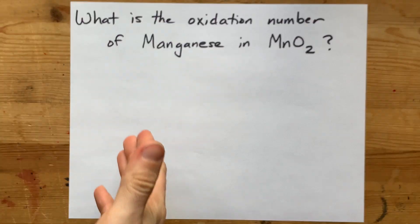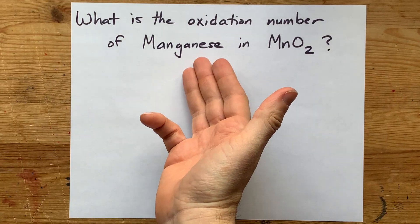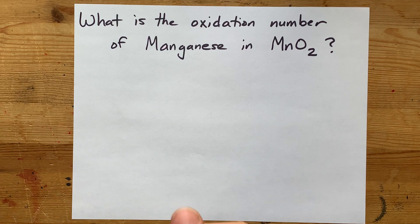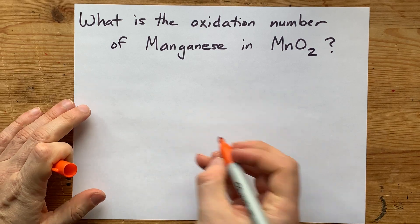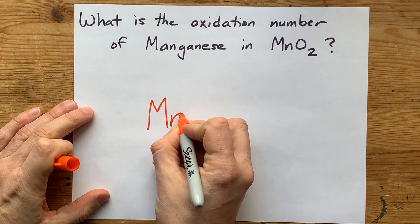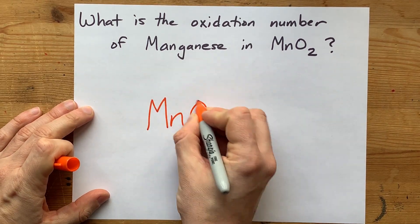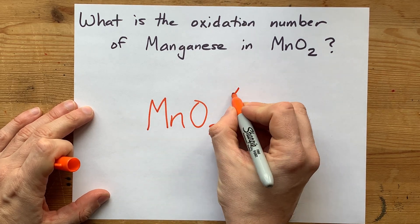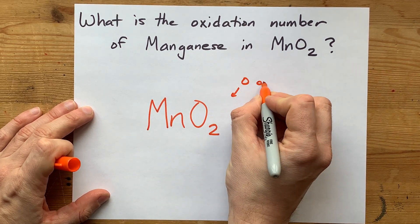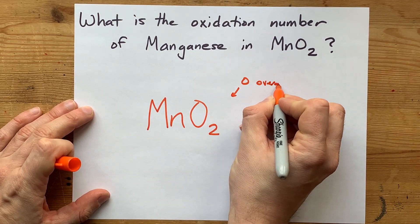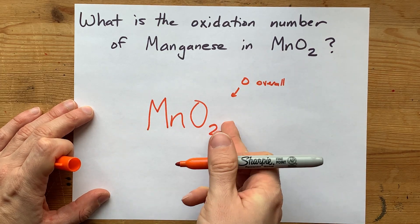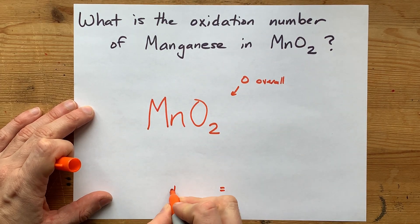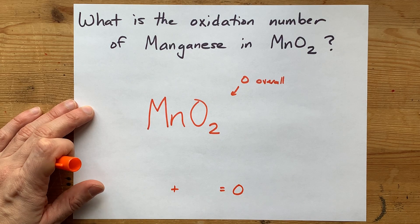What is the oxidation number of manganese in MnO₂, or manganese dioxide? MnO₂ has an overall charge of zero, which means that all the oxidation numbers combined are going to have to equal zero.